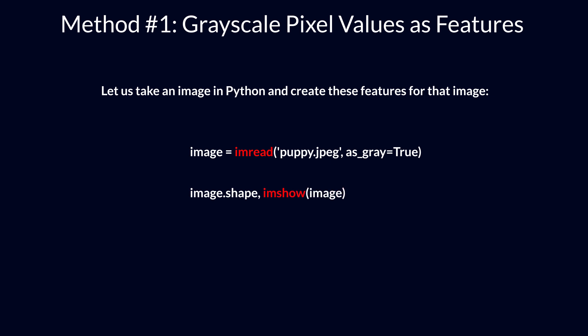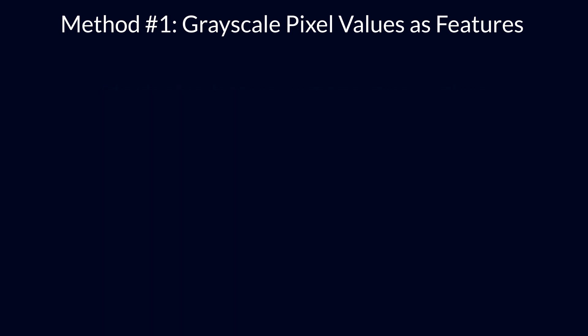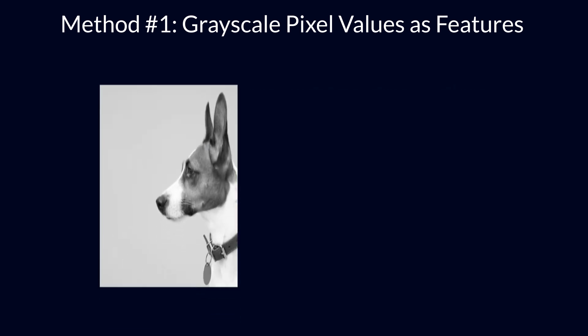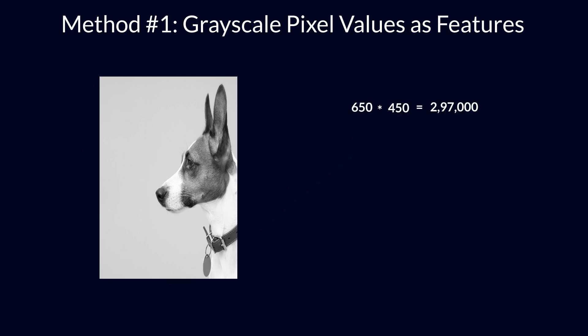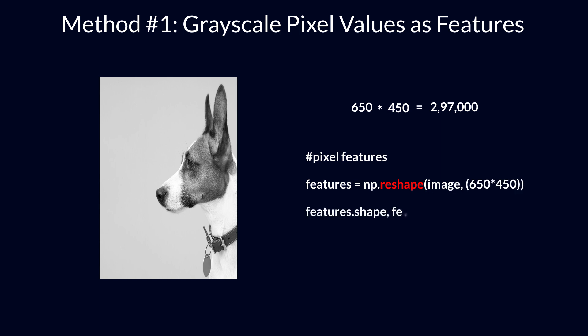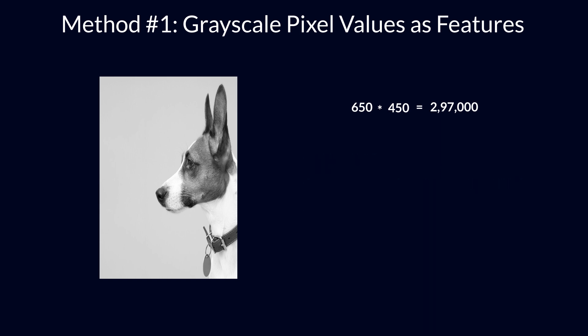I used the imread method in Python to read the image, and the image.shape method to get the dimension of the image. The image shape here is 650x450. Hence, the number of features should be 297,000. We can generate this using the reshape function from NumPy, where we specify the dimension of the image.